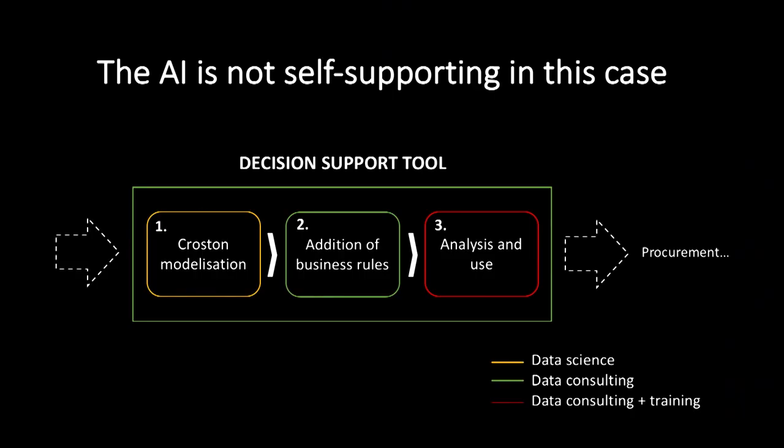To conclude, in this case the AI is not self-supporting, because as we saw, after the Croston modelization there was an adaptation to a business context. The inventory manager needs to analyze the results, choose the best model, and implement it within the whole supply chain. So tomorrow, inventory managers will have to work with AI in the form of a decision support tool, and not be replaced by AI.